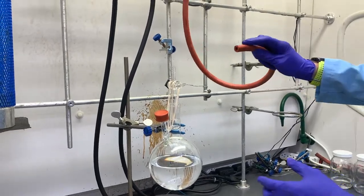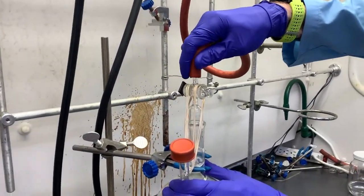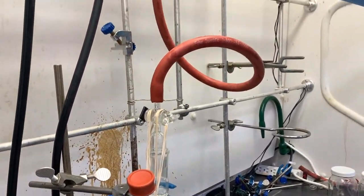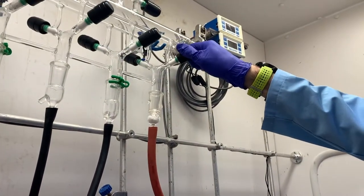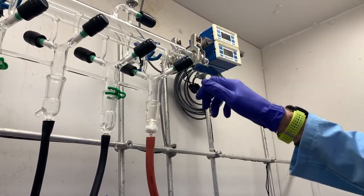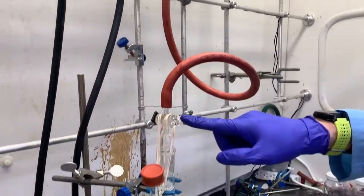Alexa will take her flask back to the Schlenk manifold and re-attach it to one of the taps on the line. Do not open the flask until you have evacuated and refilled the hose itself to make sure the hose is completely clear of air.